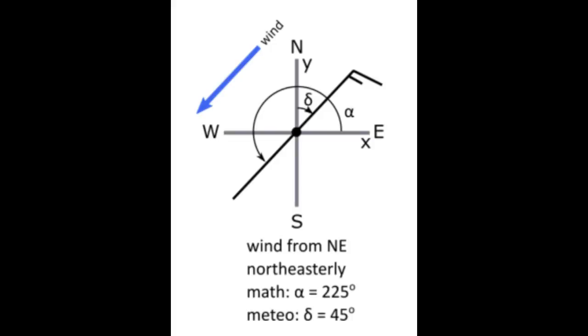Let's look at one example that relates the meteorology and math angles. First, note that the grids are related with positive x corresponding to east and positive y corresponding to north.